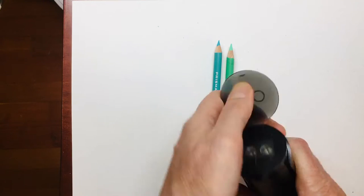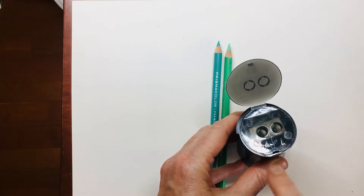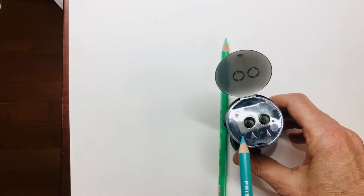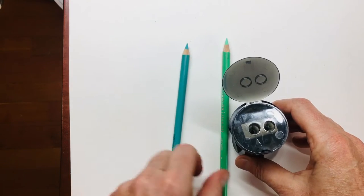So open the lid. There's two different options for sharpening. There's this one on the left, which gives you a short point, just like that.